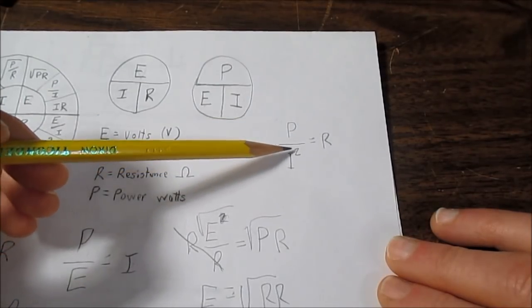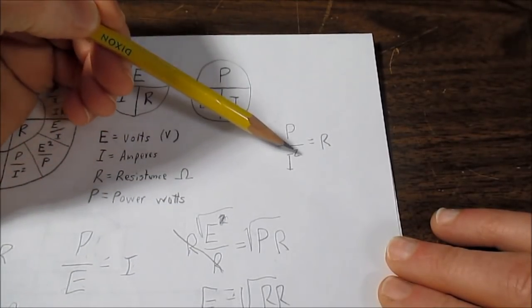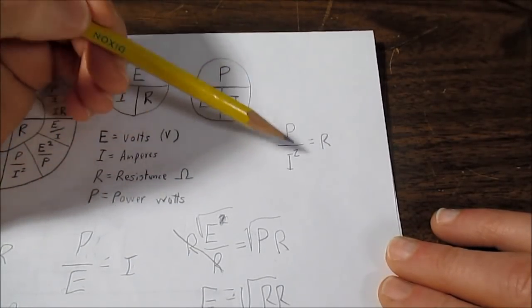However, we have to square current to find the resistance. So that leads to one problem here. We just can't flip-flop these that easy.